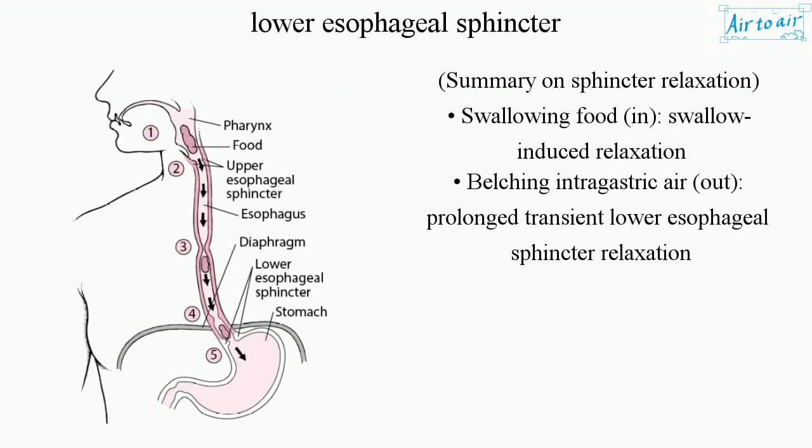Summary on sphincter relaxation: swallowing food triggers swallow-induced relaxation, allowing food in. Belching involves intragastric air going out via prolonged transient lower esophageal sphincter relaxation (TLESR).